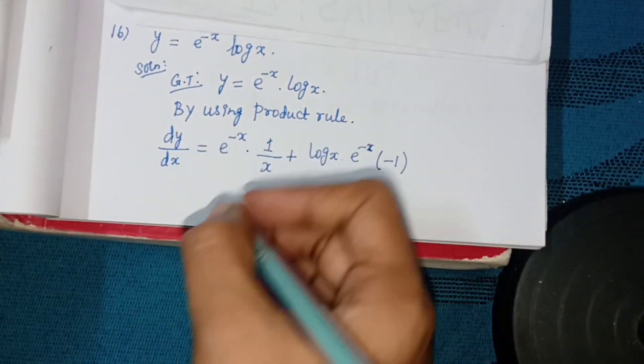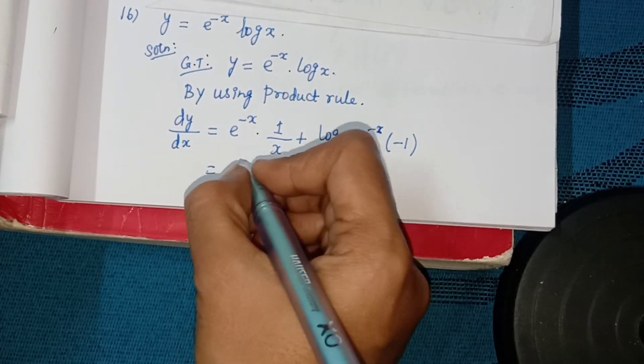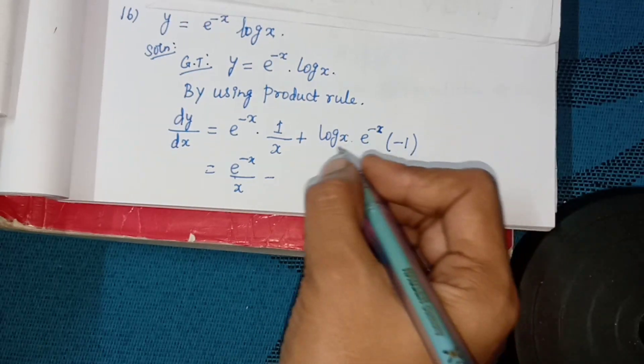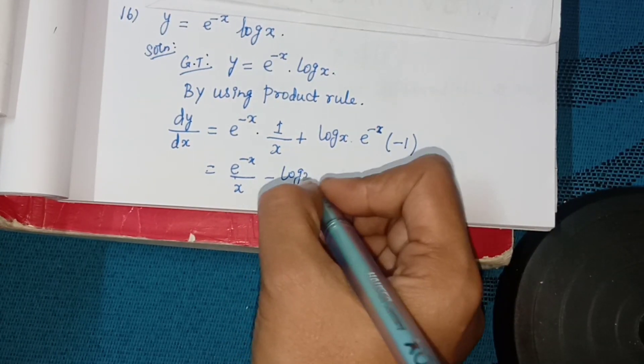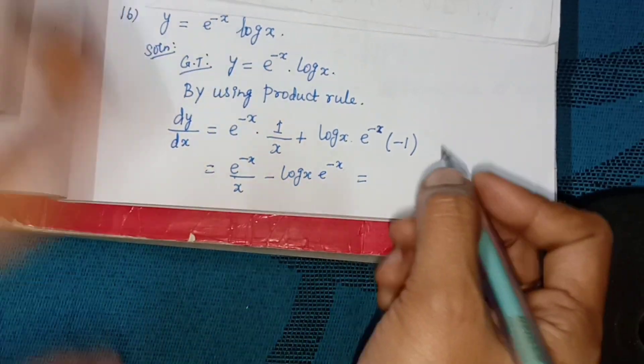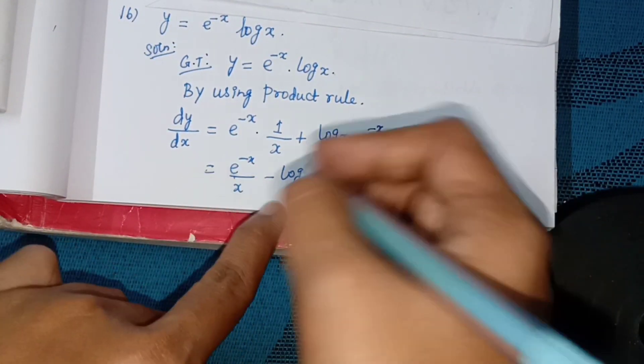This equals e power minus x divided by x minus log x into e power minus x. Equal to e power minus x, common available x.